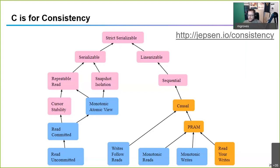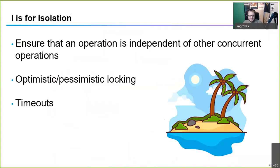You might look at this and say strict serializable is the best since it's at the top. But there are tradeoffs — if a node shuts down in a distributed system, nobody else can do anything until it's back up. There's a huge latency tradeoff. So strict serializable is actually rarely used — think of it as one operation at a time. Read committed is actually the default for many relational databases. Jepsen has a whole website around this. I'll provide links towards the end, and the slides will have all the links as well.